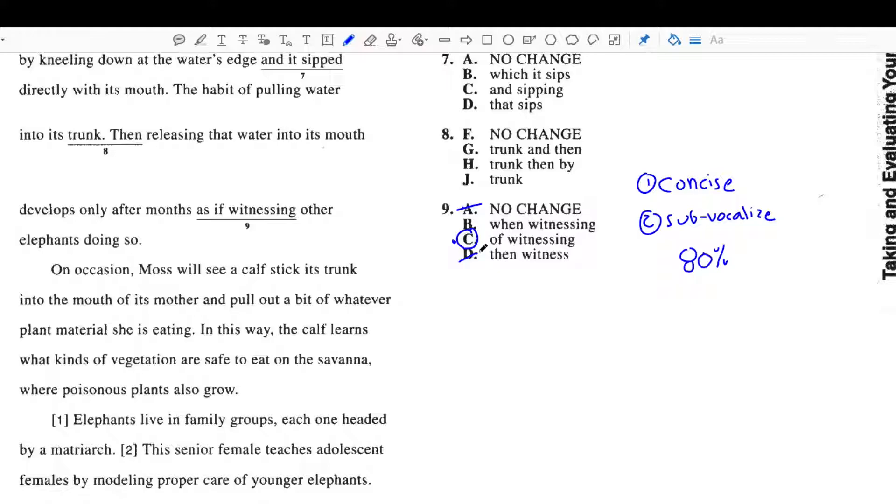Okay. So, now what I'd like to do is go through some more advanced reasoning why C is correct and the others are not. And, in order to do that, I need to talk about something we haven't spoken about, and that is what a subordinating conjunction is, versus a preposition.